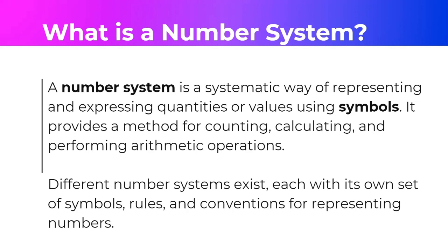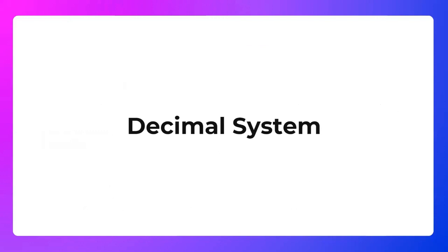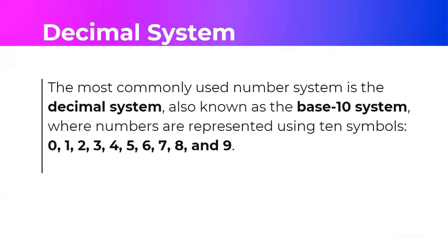Let's start first with the most common, which is the decimal system. This is the most common one, and this is actually the one that we are using because this is the base 10 system. Numbers are represented using 10 symbols starting from 0, 1, 2, 3, 4, 5, 6, 7, 8, and 9. So this is our typical number system.